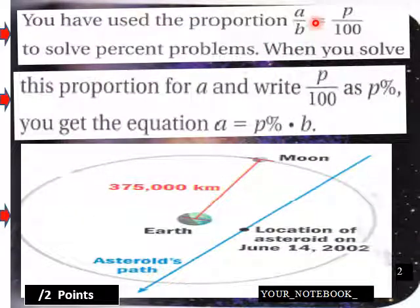You've used the proportion A over B equals P over 100 to solve percent problems. When you solve this proportion for A and write P over 100 as P percent, you get the equation A equals P percent times B. So this is our example here of the Moon and the asteroid.